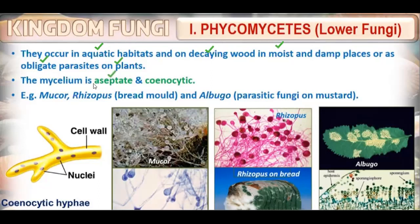The mycelium of Phycomycetes is aseptate — there is no septa, meaning it is coenocytic and multinucleated. Examples include Mucor, Rhizopus (which grows on bread), and Albugo, which is a parasitic fungus on mustard plants.